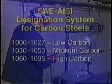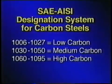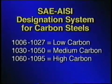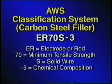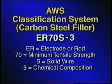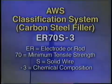You'll learn how to use an SAE AISI number to determine the major alloying elements and carbon content of steels, and how to read the AWS filler metal designation so you can match filler metal to the steel you're welding.